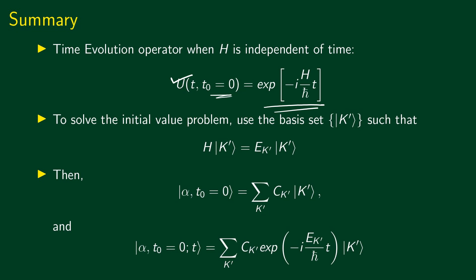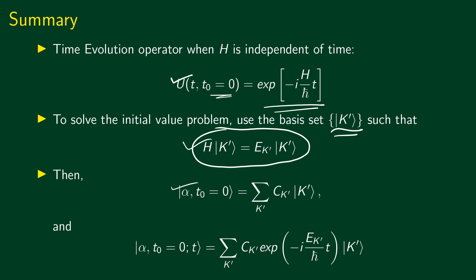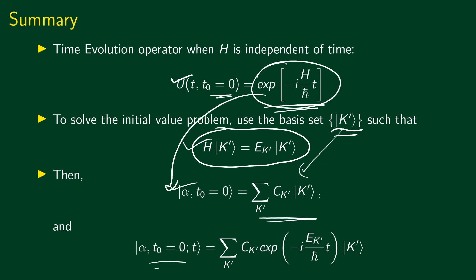We said that solving the initial value problem becomes simple if we use a basis such that the base kets are also energy eigenkets. When we say that they are energy eigenkets, we mean that each of the base kets satisfies an eigenvalue equation of this form. Now we can find the state at any later time given the initial state. We just expand the initial state in terms of the chosen basis and then apply this time evolution operator to it, and you get the state at a later time.